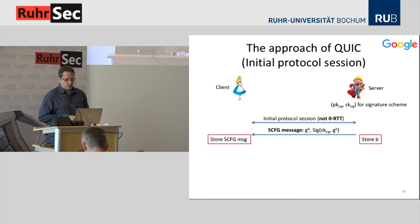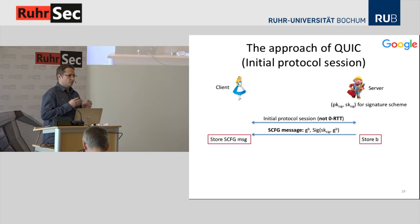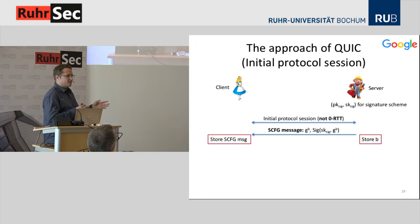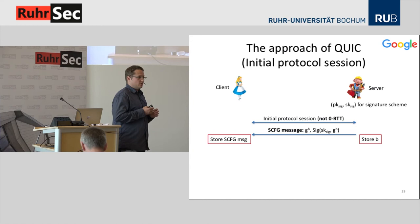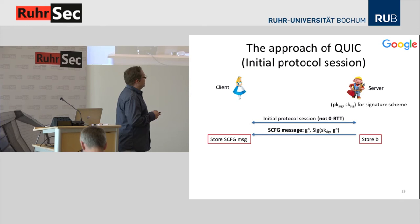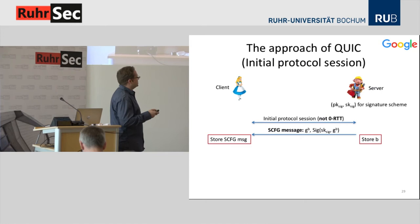Before discussing our approach, let me show a couple of other approaches for achieving zero-round-trip-time. One is the approach of QUIC, the protocol developed by Google which essentially introduced the concept of zero-round-trip-time key exchange. We first have an initial protocol session which is not zero-round-trip-time. In this initial session, the server transmits a so-called server configuration message, or SCFG message. This is essentially a Diffie-Hellman share and a signature which certifies this Diffie-Hellman share to protect authenticity and ensure it really originates from the server.